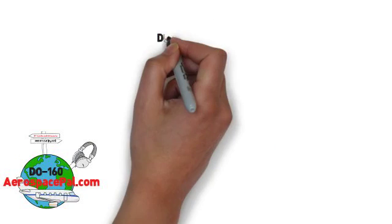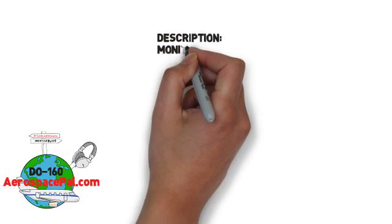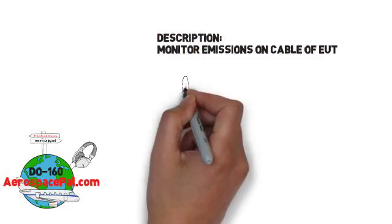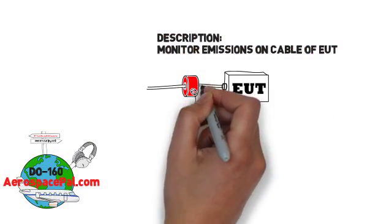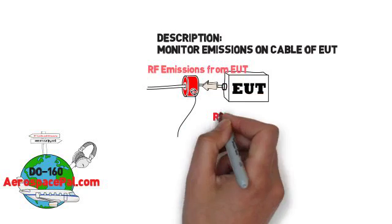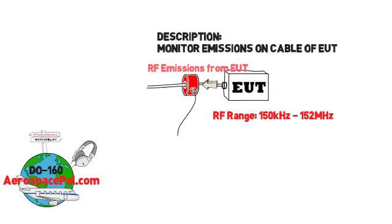During this test, we're going to monitor the emissions from our interconnecting cable or cables of the EUT. This test is a short test ranging only one decade from 150 kilohertz to 152 megahertz.